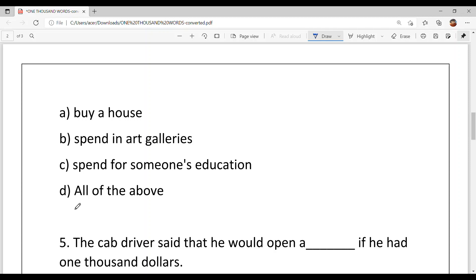all of the above. And option D is your answer, all of the above, because all three things he suggested to him because he didn't like him.